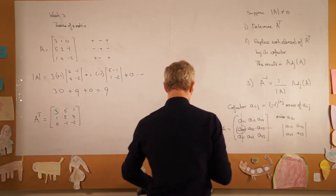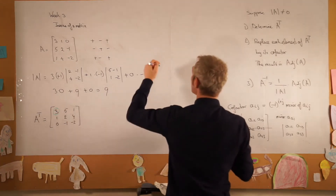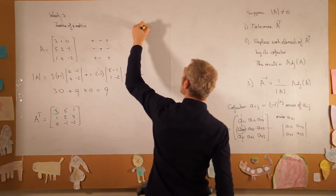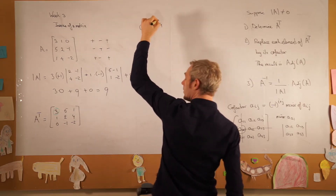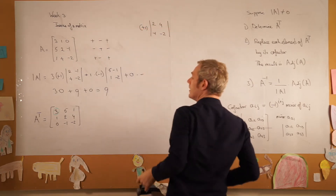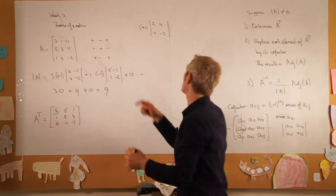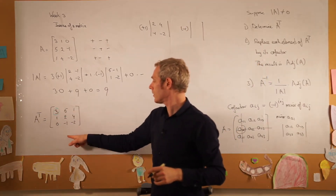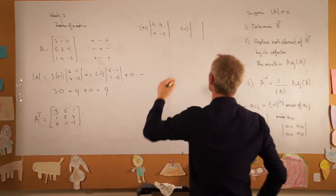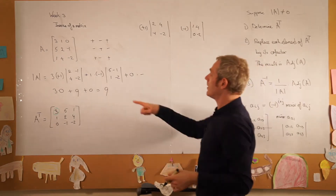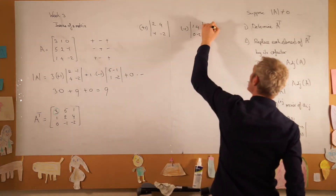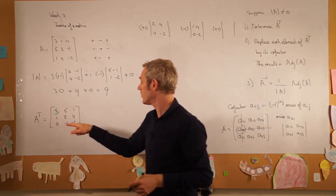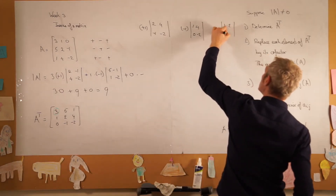For the first row: element 3 has cofactor plus 1 times the determinant of 2, 4, minus 1, minus 2. The second element has a minus sign, removing the first row and second column gives 1, 4, 0, minus 2. For the third element we have a plus sign, removing the first row and third column gives 1, 2, 0, minus 1.